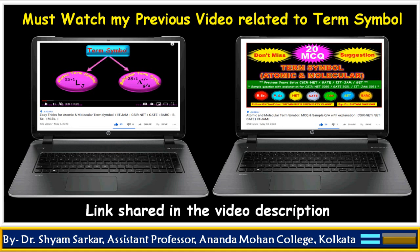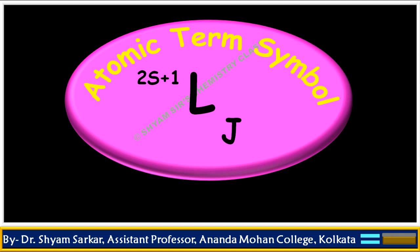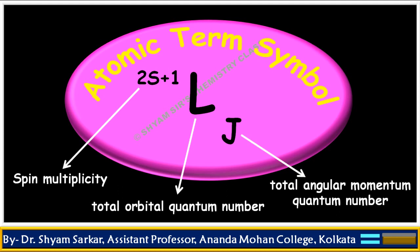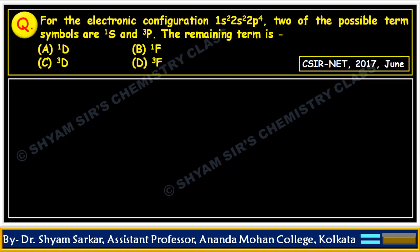Atomic term symbol is generally represented by 2S+1LJ, where 2S+1 is spin multiplicity, L is the total orbital quantum number, and J is the total angular momentum quantum number. Details about all these terms are in my previous video. Now let's come to this problem — this was asked in CSIR NET 2017 June.